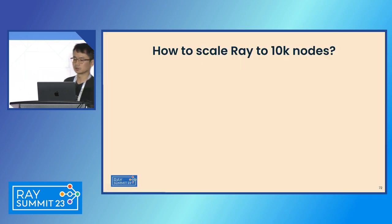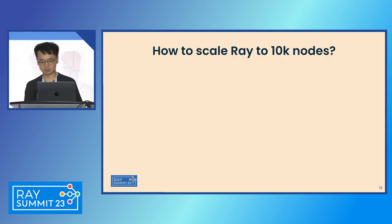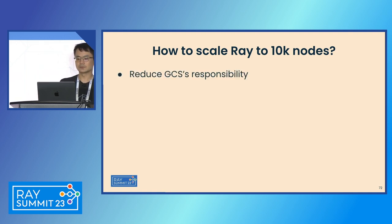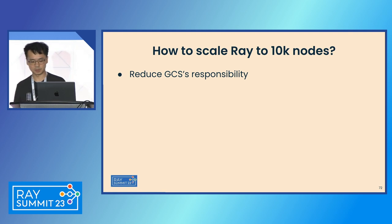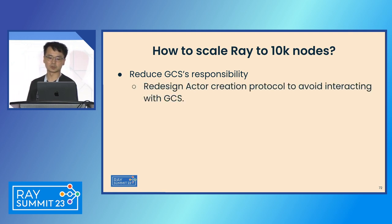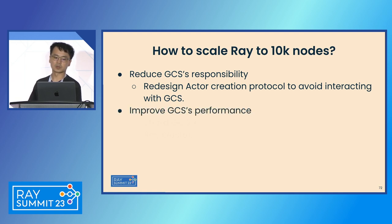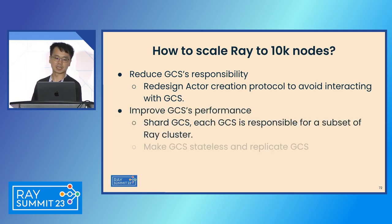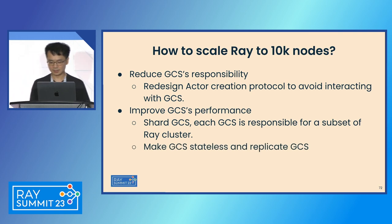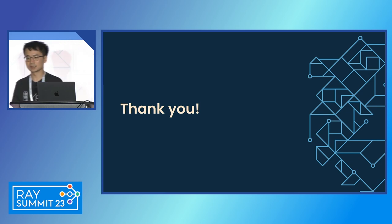But what if we want to scale further? There are two directions, because GCS is still the bottleneck. The first is to reduce GCS responsibility — for example, redesign the actor creation protocol to avoid interacting with GCS. Or we can improve GCS performance by sharding it or making it stateless. That's everything for today's talk. Thank you.